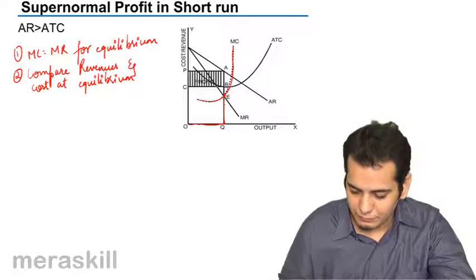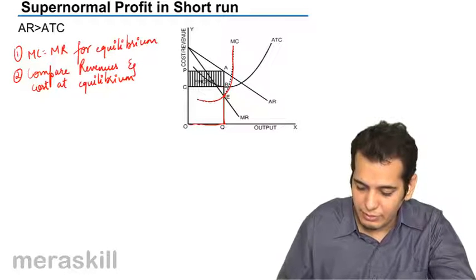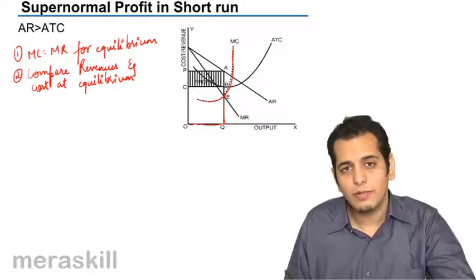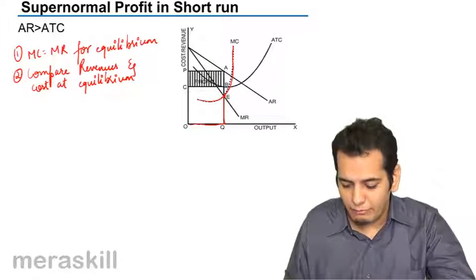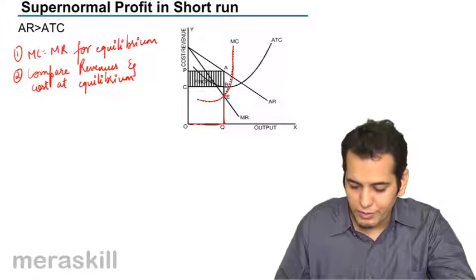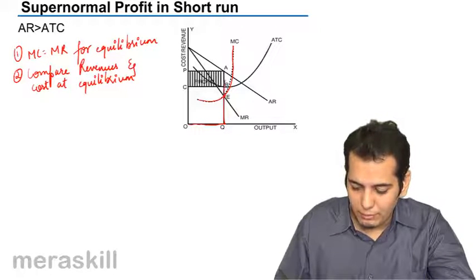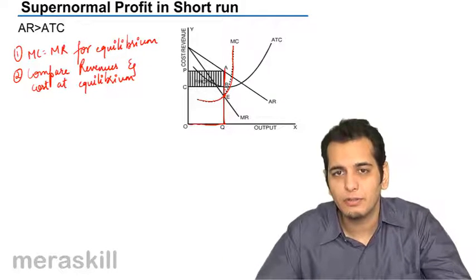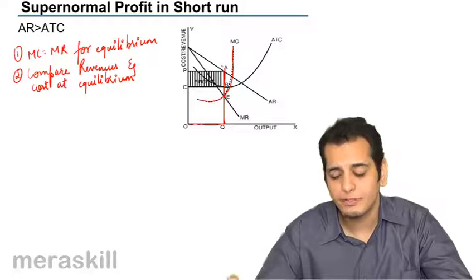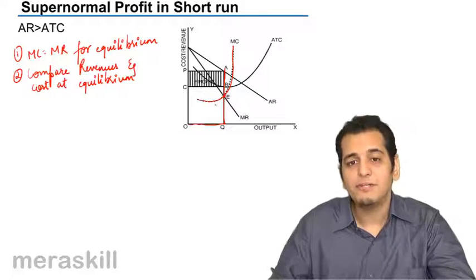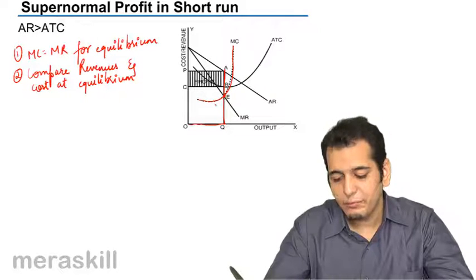So in this case, my revenue is how much? My revenue is AQ because Q is my equilibrium production. So I have to go up from this point equilibrium, that is E. I go up till my average revenue curve. My average revenue curve gives me the revenue. So this is the total revenue that I am earning. So my revenue is AQ.